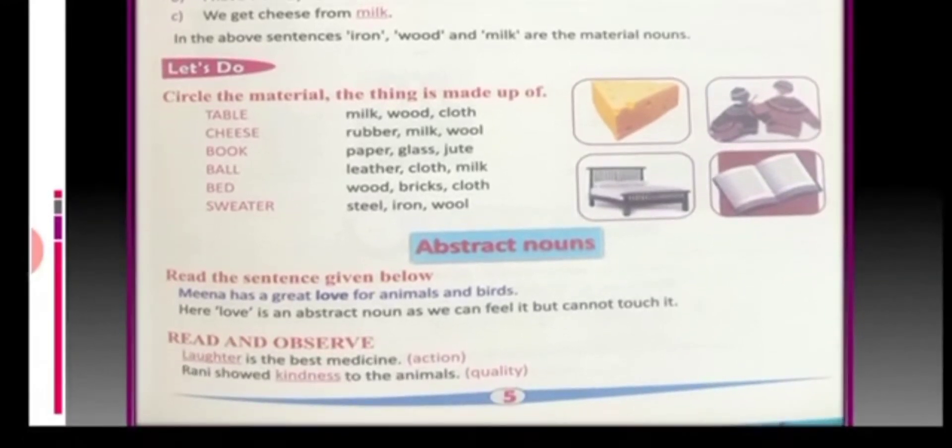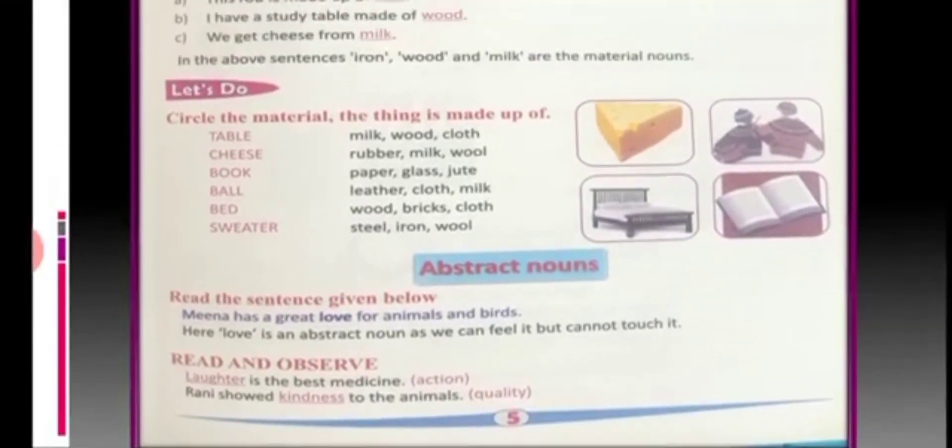Now, let's move to the last type of noun which is the abstract noun. Mina has great love for animals. Now, children, just tell me, can you see this love? No, but you can feel it. So, the naming word or you can say a word which is given to name your feelings which is not in the physical form is called the abstract noun.